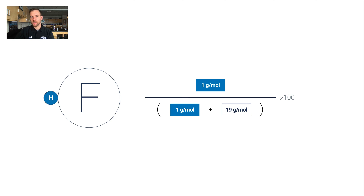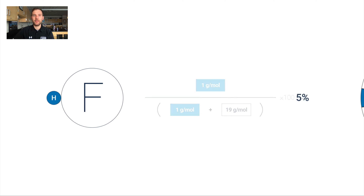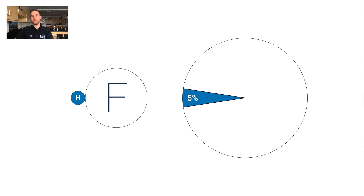So I put 1 gram per mole over the whole molar mass — that's 1 plus 19, which is 20 — and then I multiply by 100 to turn it into a percent. I end up with 5%. That means 5% of the mass of a sample of HF is hydrogen, and therefore 95% is fluorine.